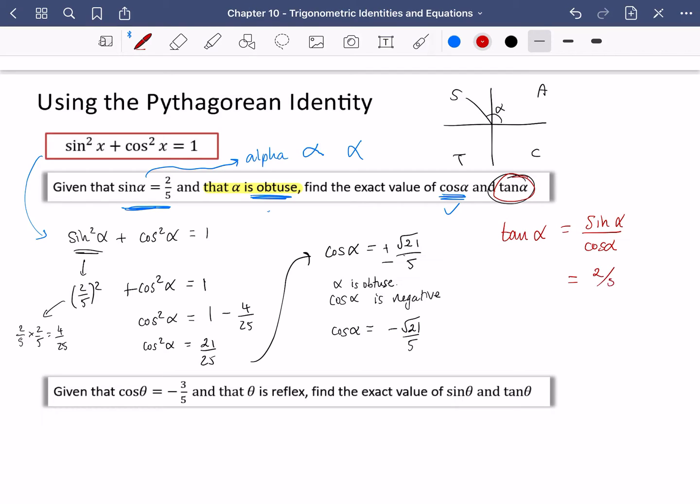So now I can actually just find out what tan alpha is by substituting in some values. So sine alpha is two fifths, and cos alpha is minus root 21 over five. And I can see I've got some fractions within fractions. So to get rid of those fractions within fractions, I can multiply the top by five and I can multiply the bottom by five. So I get two over root 21 and it's negative. And I can either leave it as that or I can rationalize it as minus two root 21 over 21. Notice also that tan alpha here is negative. And that makes sense because sine is the only one that is positive in this section. So I'm expecting cos and tan to be negative.